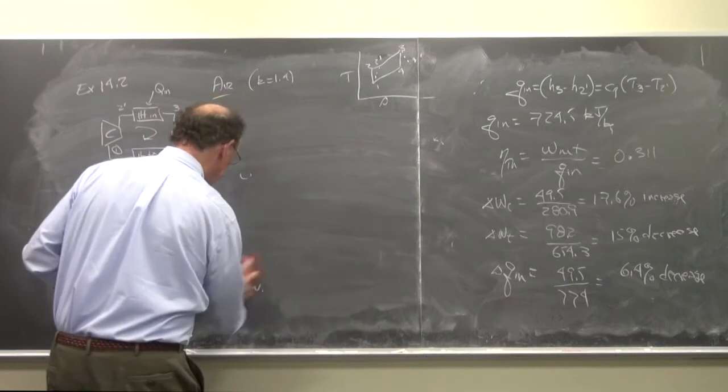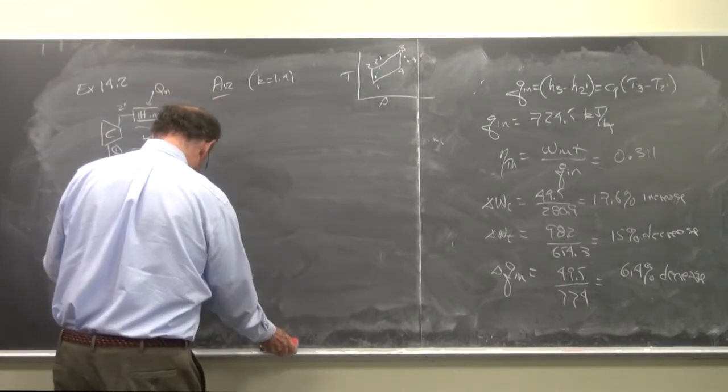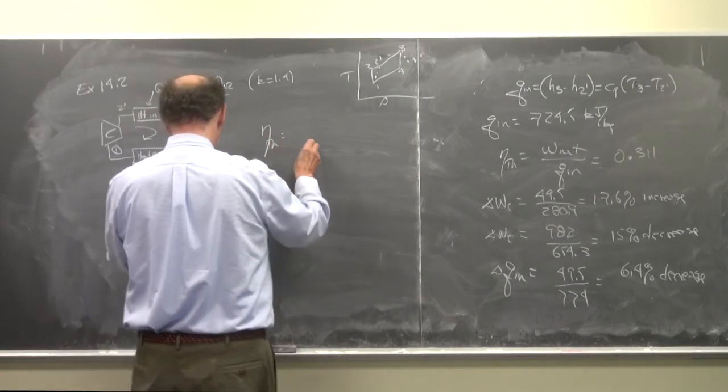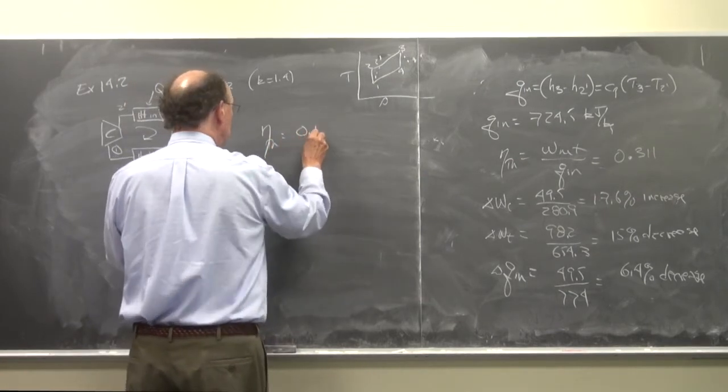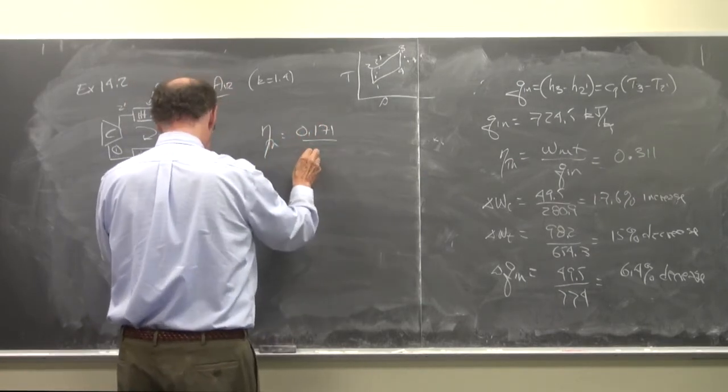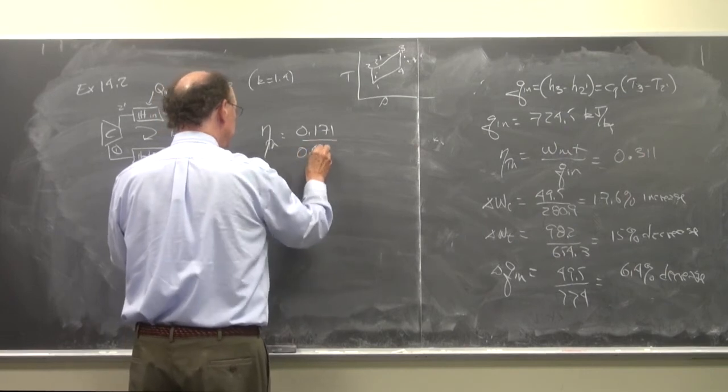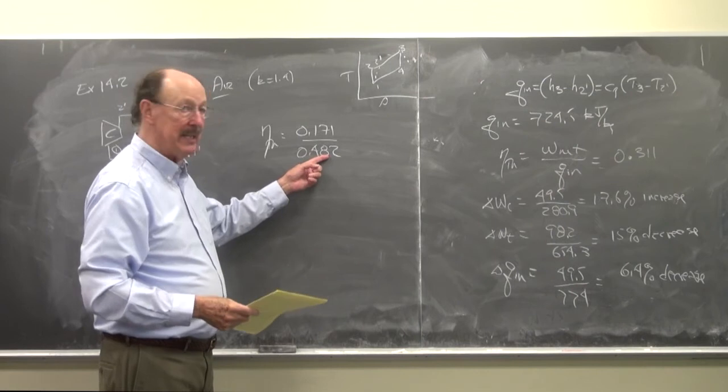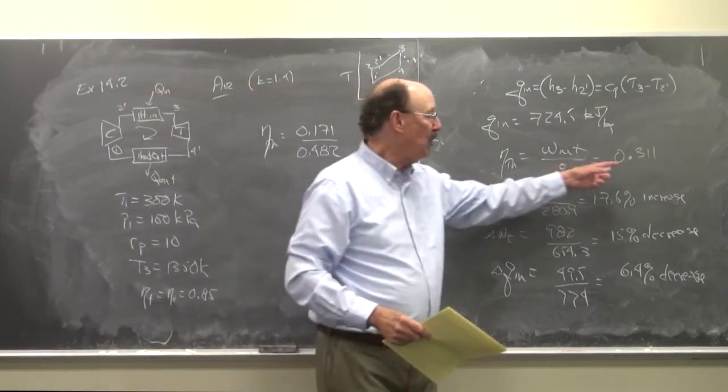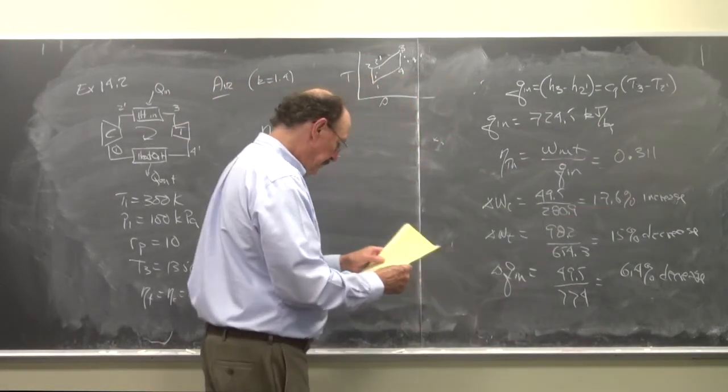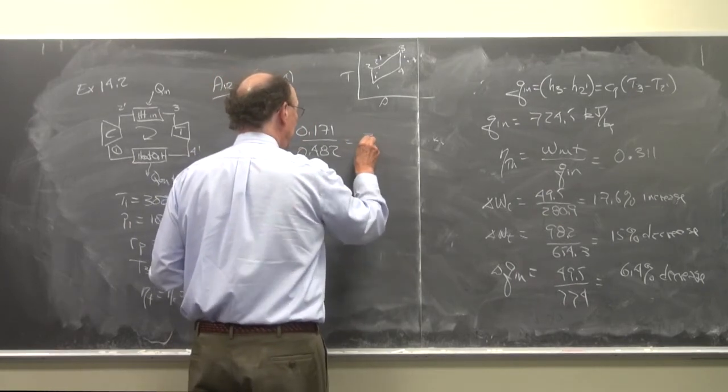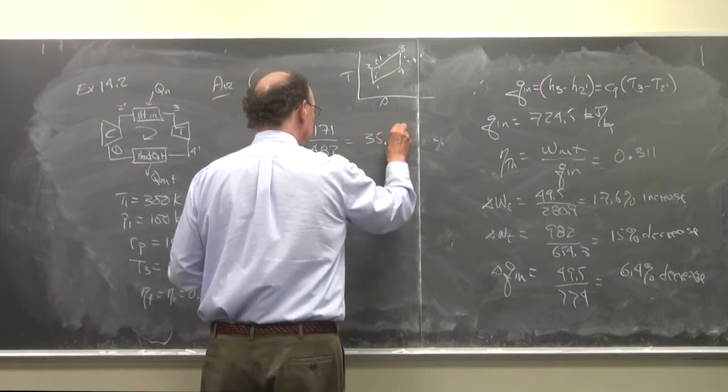And the thermal efficiency is a double whammy because your w net dropped significantly. So the thermal efficiency: 0.171 over 0.482—so initially the thermal efficiency was 48.2 percent, now it's 31.1—so that's a big drop. This is a 35.5 percent decrease.